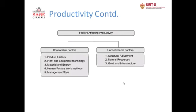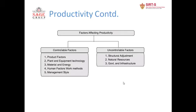There are factors affecting productivity: some are controllable and some are not controllable. Non-controllable factors include structural adjustment, which cannot be changed quickly, natural resources such as rain, mountains, or rivers affecting your site, and government policies and infrastructure, which are also not easily changed.